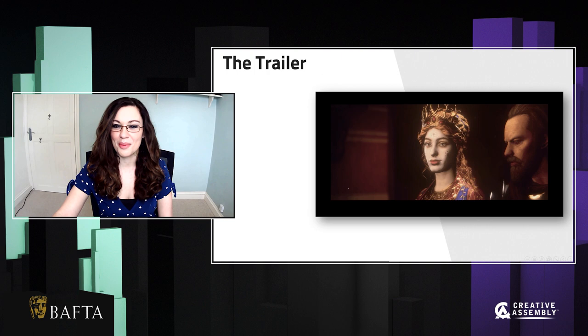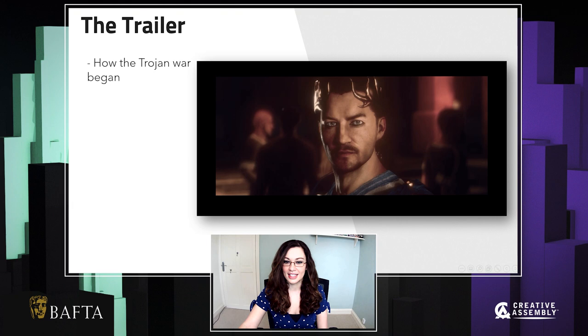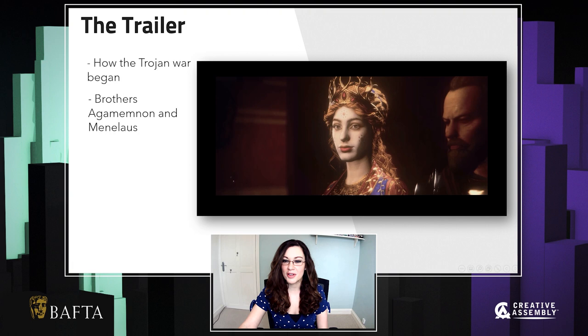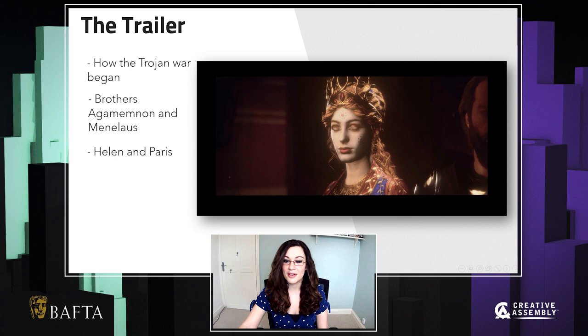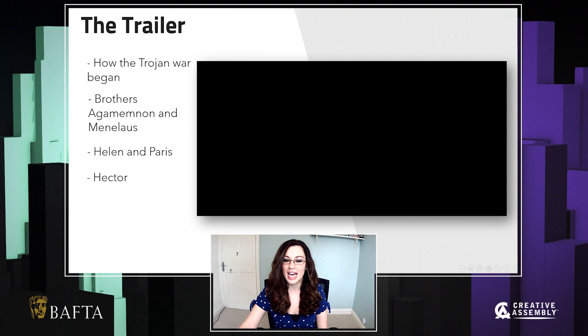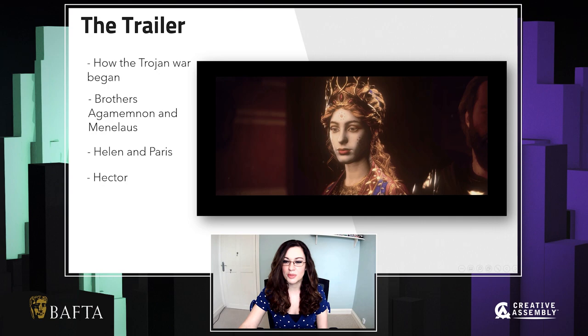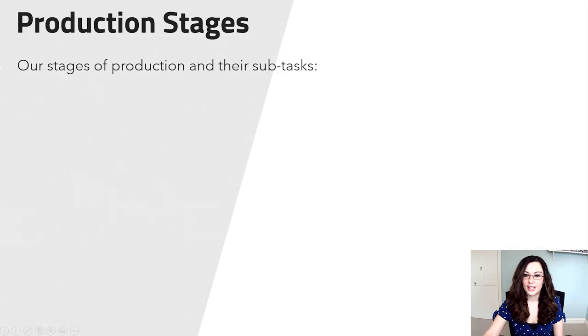Hopefully you've all had a chance to give our trailer a watch. Our trailer shows how the Trojan War began. On one side, we have the brothers Agamemnon and Menelaus, who are preparing for war to retrieve Menelaus' wife Helen, who has run away with the dashing Paris. And on the other side, we have Helen and Paris, who have fled to Troy where Paris' brother Hector must also prepare for war as a consequence of his brother's foolish actions. Our trailer begins with Paris meeting Helen and ends just before the Siege of Troy.